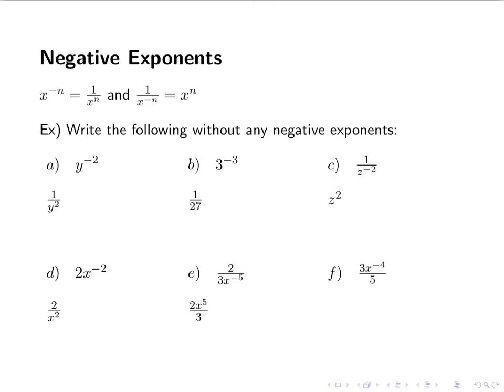For the next one, only the x is raised to a negative exponent, so that's the only thing that gets moved. The 3 stays where it is, the 5 stays where it is, and we end up with 3 over 5x to the 4th.